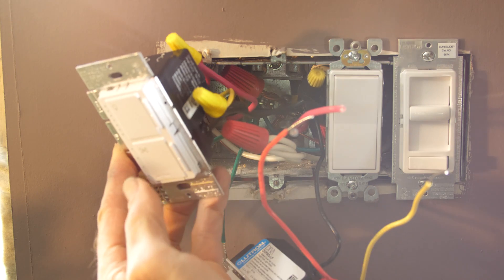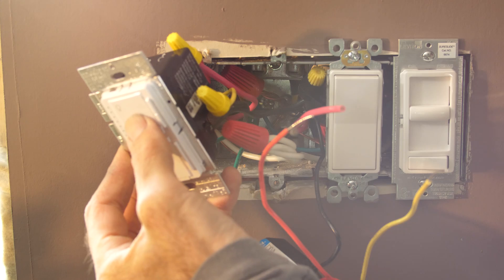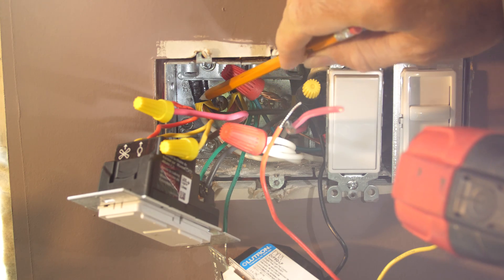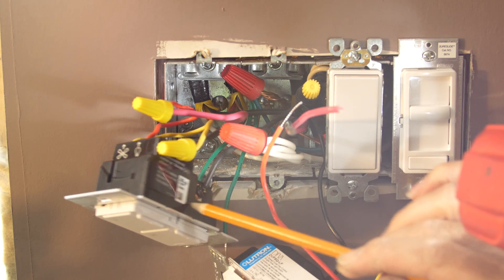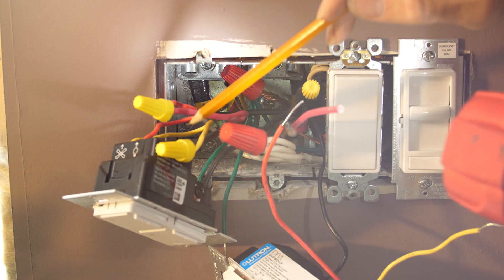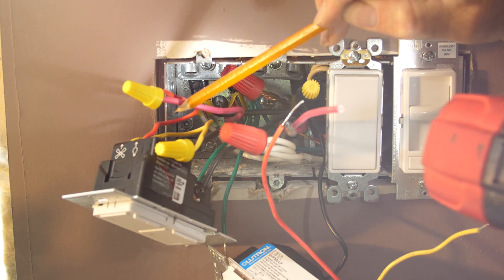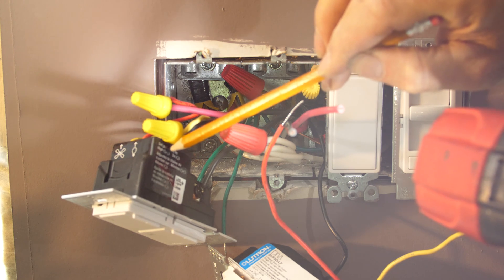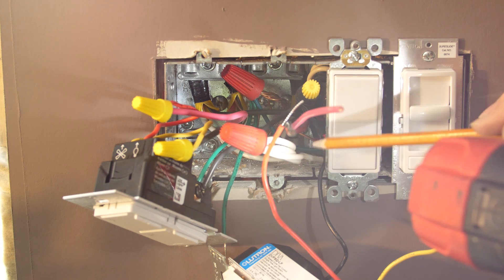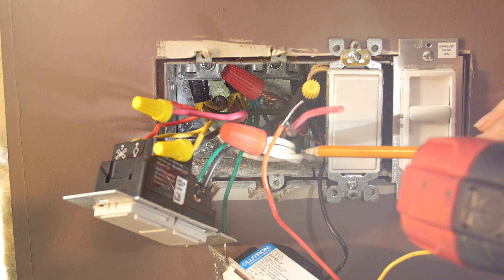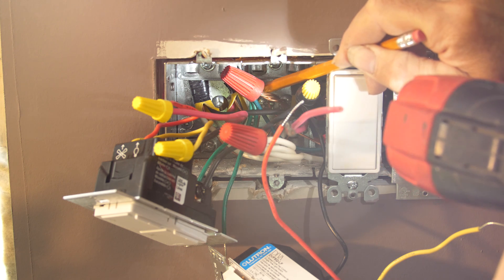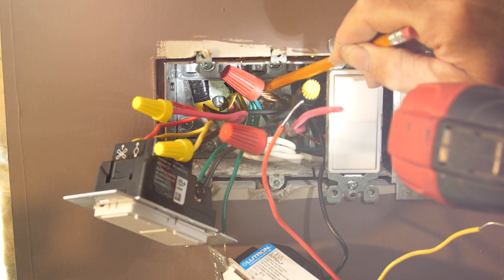So here's our fan switch, it controls our fan motor speed and our light, our single switch. Our line in is coming from the top here, we've got our black going to our black screw post, we've got our light, this is for our light the load out, this is for a fan motor the load out, and all of our whites are ganged together here. I've got multiple switches happening so don't worry about that so much, just gang your whites together and then all of the grounds are ganged together here and grounded off to the box.